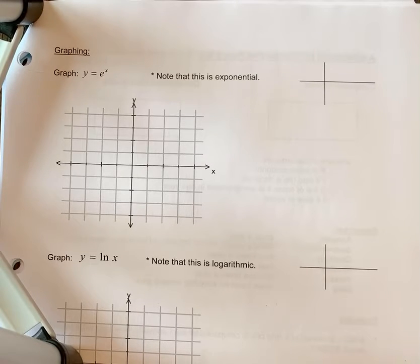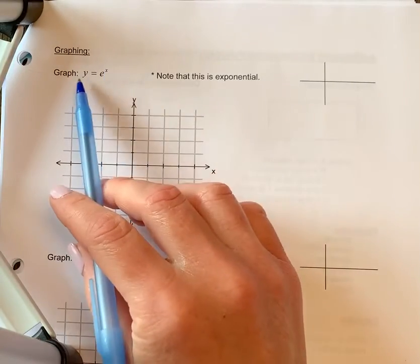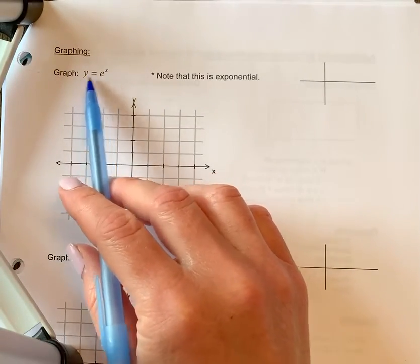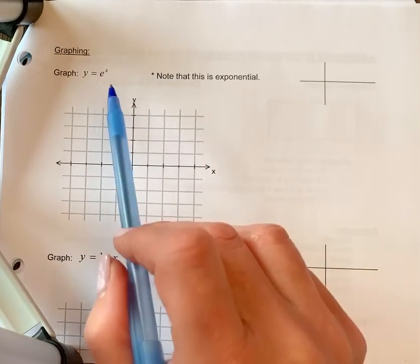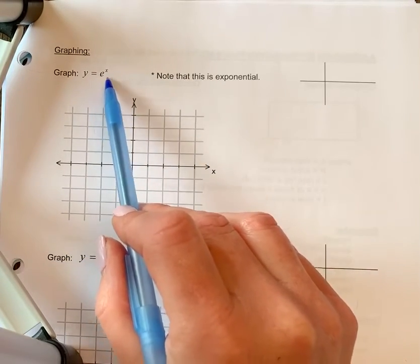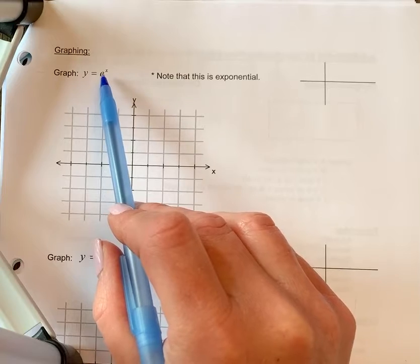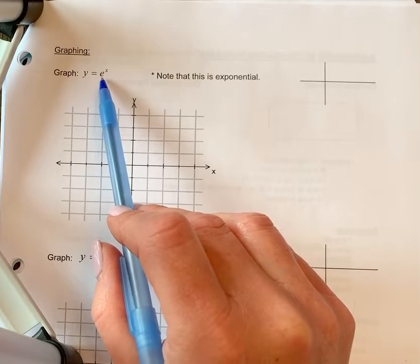Okay, we're going to look at graphing when we've got e and when we've got natural log. So the first question here, we're going to graph y equals e to the exponent x. This is actually an exponential function again. So this would have been in the exponential function chapter had we learned about e. But there's a relationship between that and logarithm, so we've got it here.